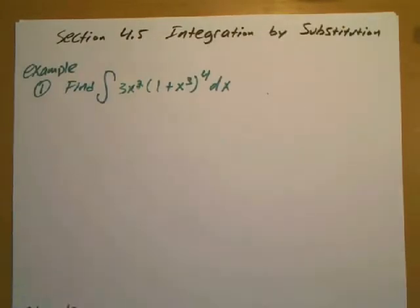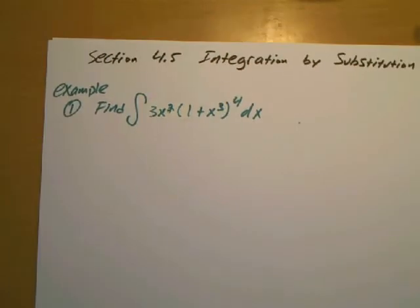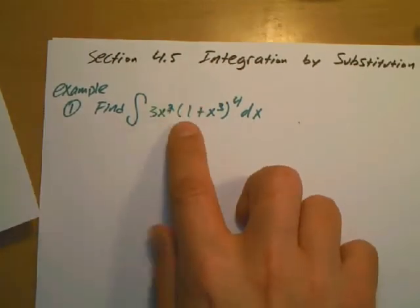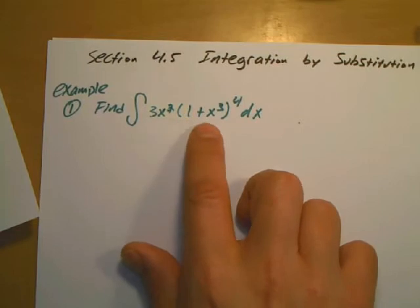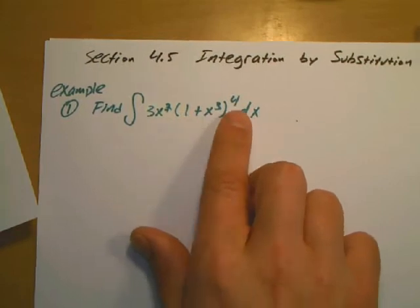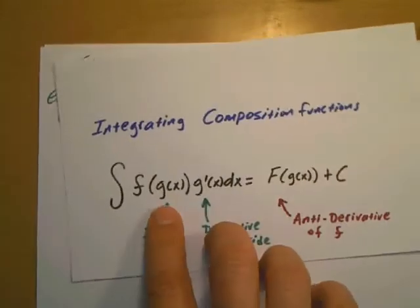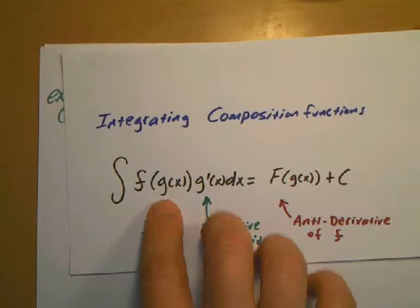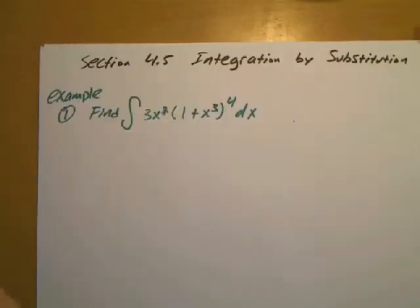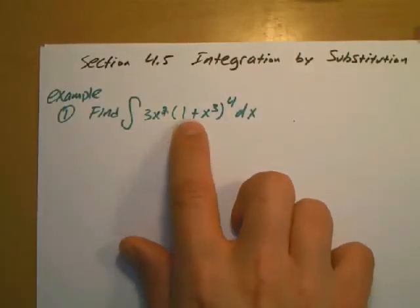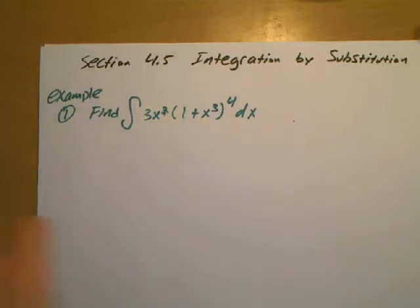The first example: I want to find the integral of 3x squared times (1 plus x to the 3rd) all raised to the 4th power. What I want to figure out is the inside part — the inside function. The inside is 1 plus x to the 3rd; it's obvious — it's what's inside the parenthesis.